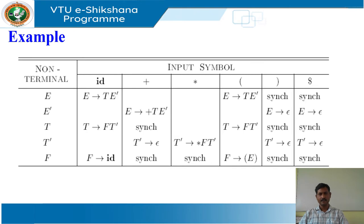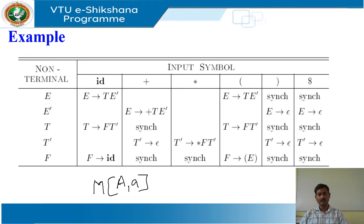The table is used as follows. If the parser looks up the entry M and finds that it is blank, then the input symbol is skipped. If the entry in the table is sync, then the non-terminal on top of the stack is popped in an attempt to resume parsing. If a token on top of the stack does not match the input symbol, then pop the token from the stack.